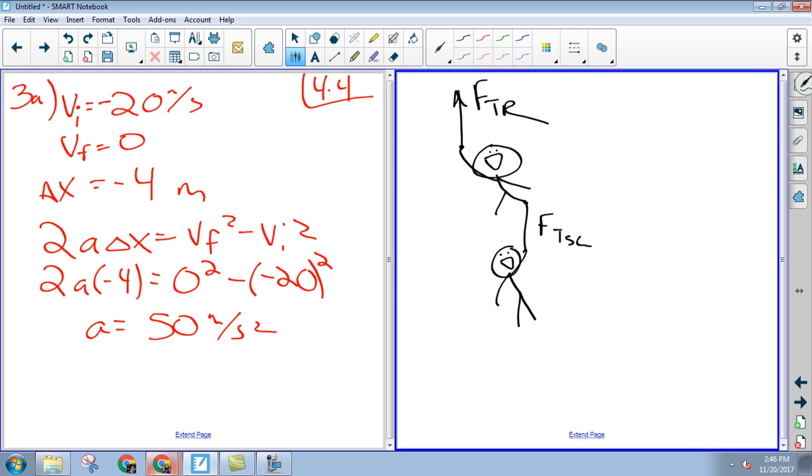All right, so we need to make a free-body diagram to find our tension, right? So there are three choices. You can make a free-body diagram for Jackie Chan, you can make a free-body diagram for Jet Li, or you can make a free-body diagram for the system. All right? There's only one bad choice. The only bad choice is Jackie Chan. Let's talk about why real quick, and then we'll go back and make a right choice.